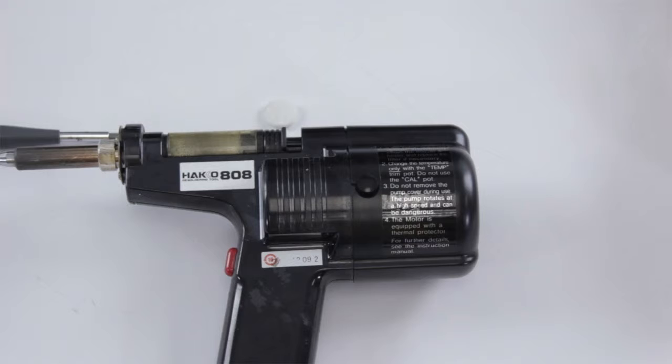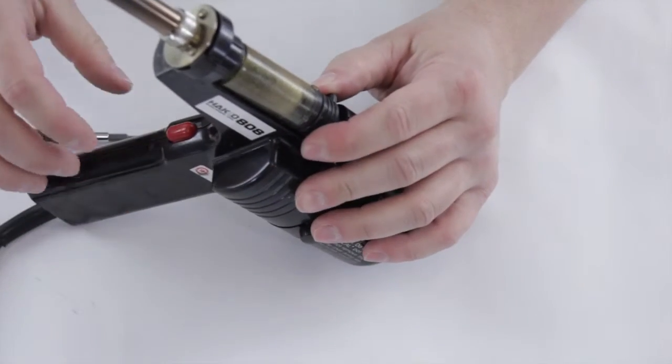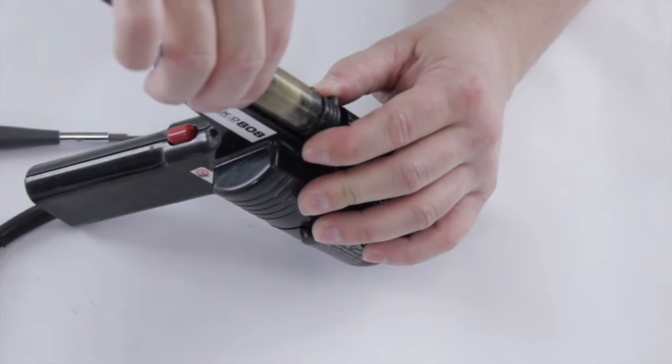So the first thing we need to do is make sure the desolder gun is off. You obviously don't want to hurt yourself – they get pretty hot. Next, we're going to remove the solder cartridge. It just comes out like that.